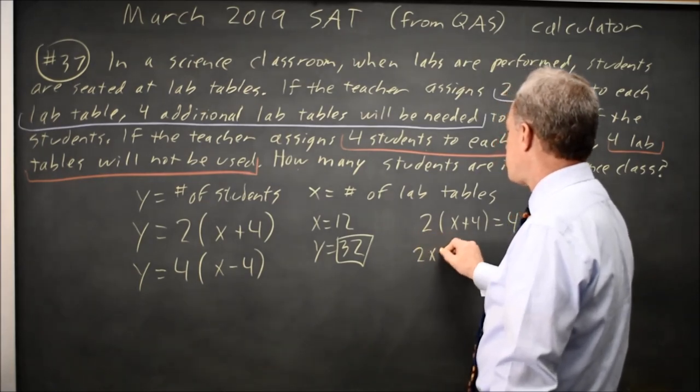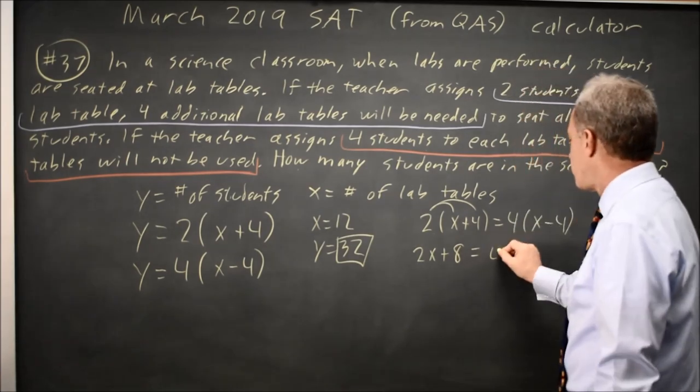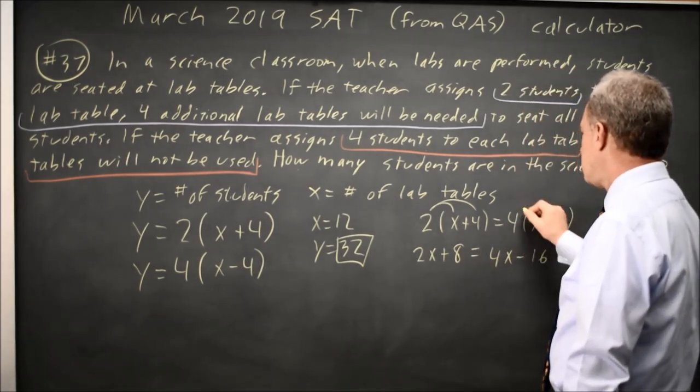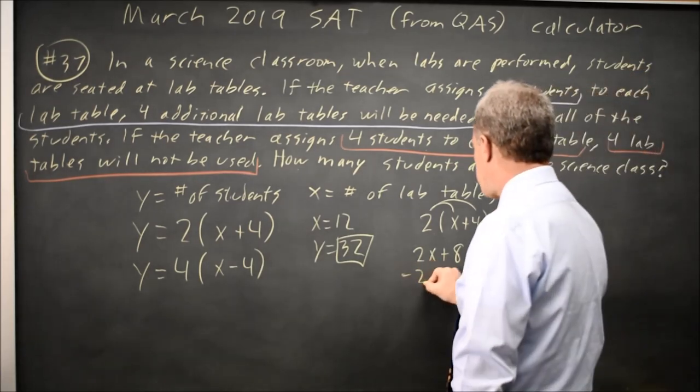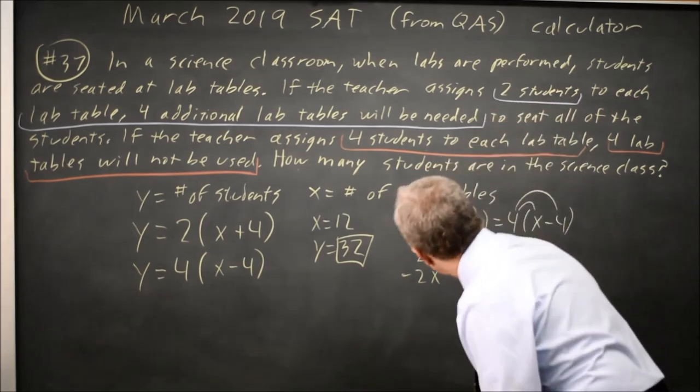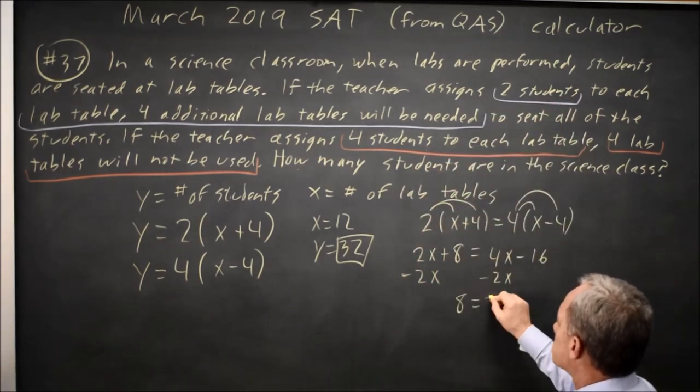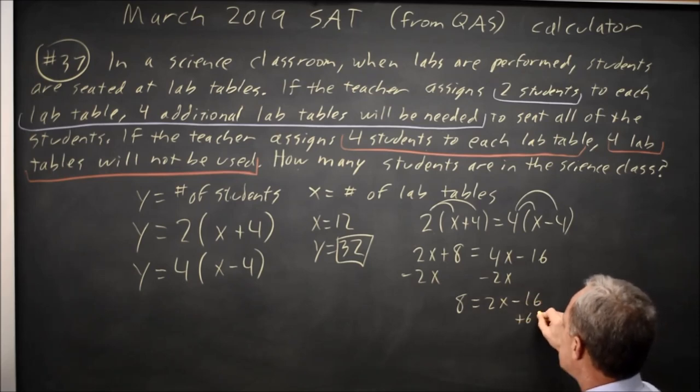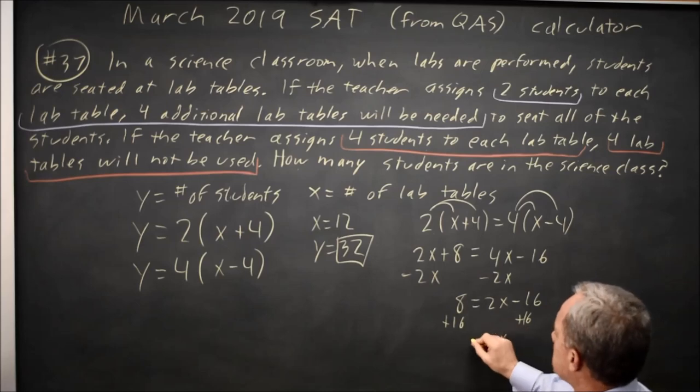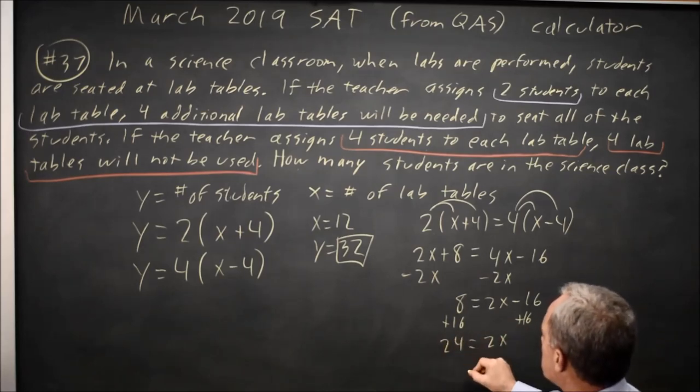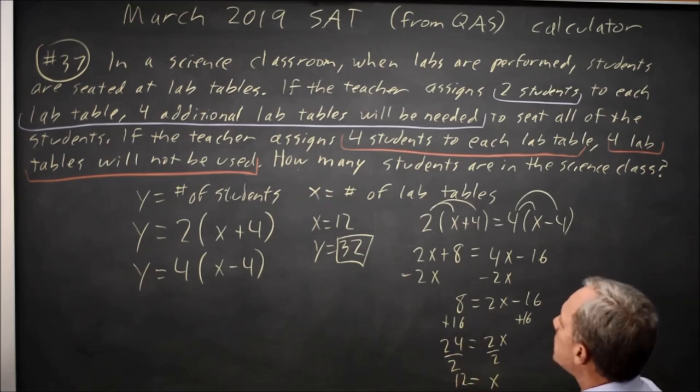Distributing, I get 2x+8. Remember to distribute the 2 to the x and to the 4, equals 4x-16. Again, four times x is 4x, four times negative four is negative 16. Subtract 2x from both sides. Always do the same thing to both sides of an equation. And that leaves me 8 equals 2x-16. Add 16 to both sides. 2x equals 24. Divide by two. x equals 12. But I'm looking for y.